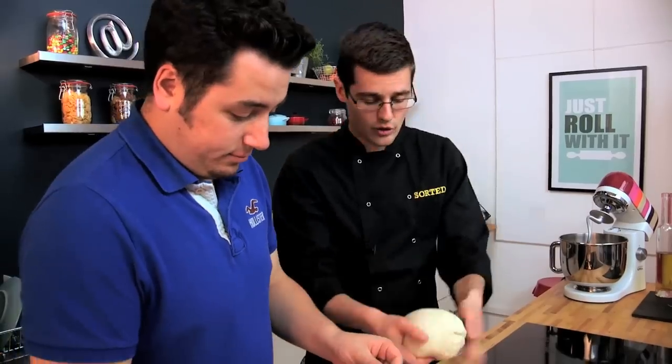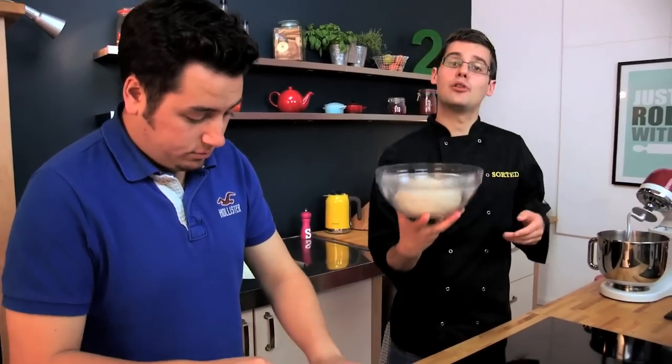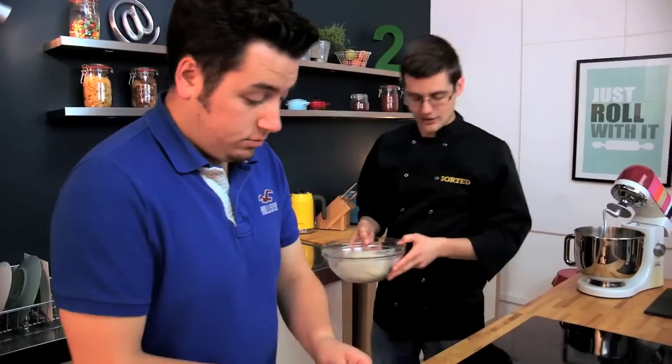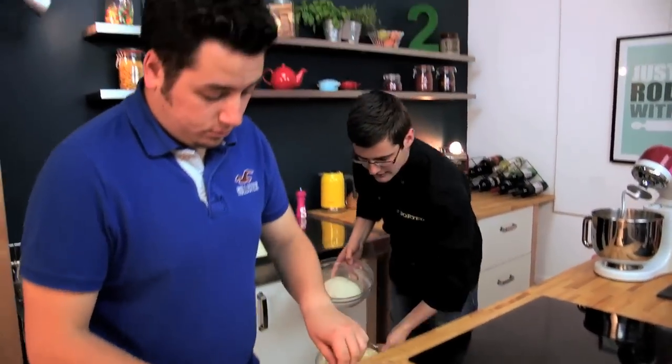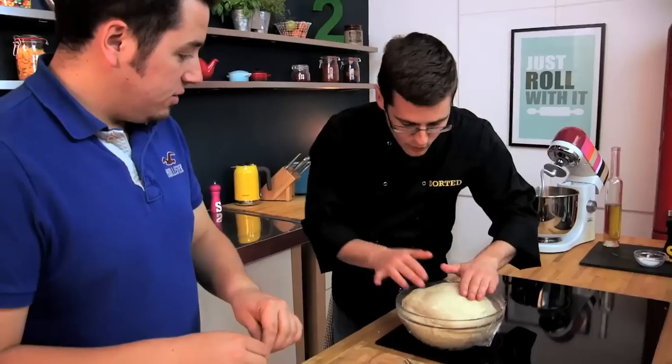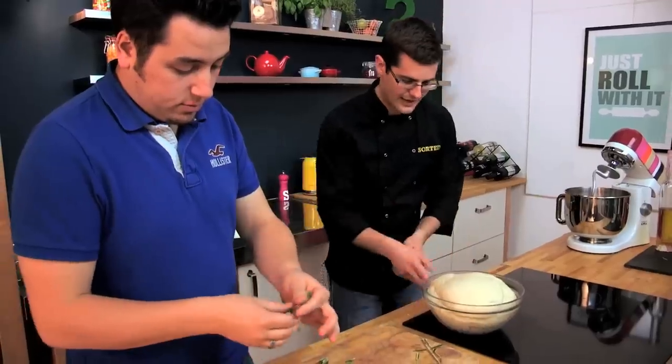But at that point, the only thing that's left is to give the yeast time to do its job. So, put it into one dough-shaped ball, into a bowl, cover it with cling film, and then either let it prove, and that's the resting process, for a couple of hours at room temperature, or even overnight in the fridge, and what you end up with is something that looks like that. Exactly the same, but loads more air, and that's what makes our bread light and fluffy and spongy.